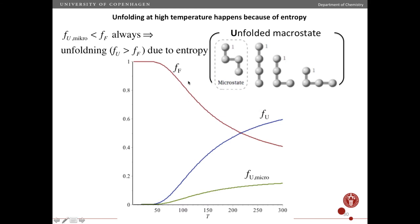Here I've plotted, for a particular value of delta H, the fraction of polymers in the folded state, the unfolded macrostate, and the unfolded microstate. This curve here is four times smaller than this curve. And as you'll see, this curve here is always less than this curve — so the probability of being in one of these microstates is always smaller than the probability of being in the folded state. It's only because there are four ways of being in this state that the probability of being in the unfolded macrostate, at some temperature, becomes higher than being in the folded state.